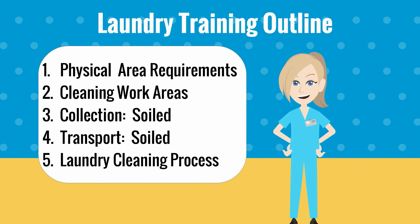These four include the physical characteristics recommended in laundry processing areas, the routine cleaning expectations for the areas, the collection process recommended for contaminated laundry, and the proper transportation of soiled laundry to the laundry department or facility.